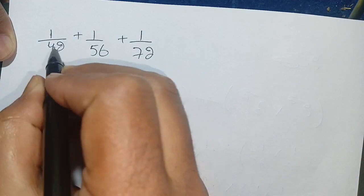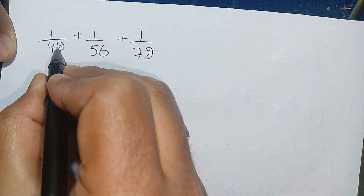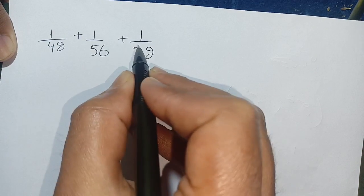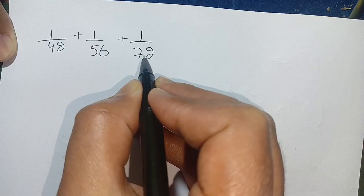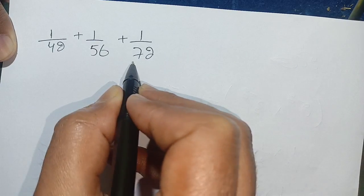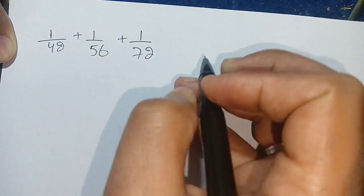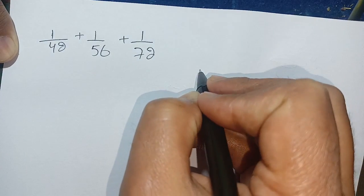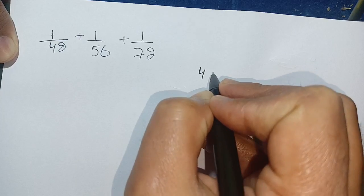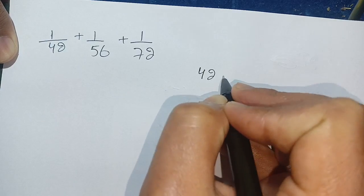Hello everyone. How to solve 1 divided by 42 plus 1 divided by 56 plus 1 divided by 72? How to add all these three terms? Let us solve this.